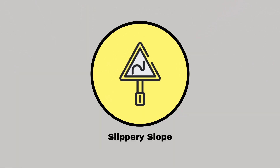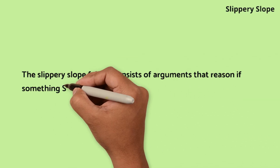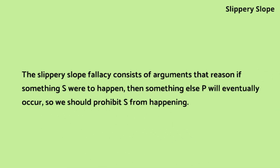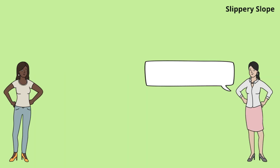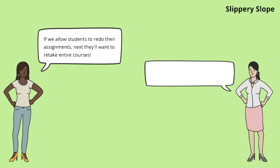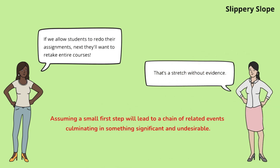Slippery slope. The slippery slope fallacy consists of arguments that reason if something S were to happen, then something else P will eventually occur, so we should prohibit S from happening. Natalie predicts extreme outcomes from a modest beginning without justification. Claire requests evidence for these claims, highlighting the need for rational linkages in arguments.